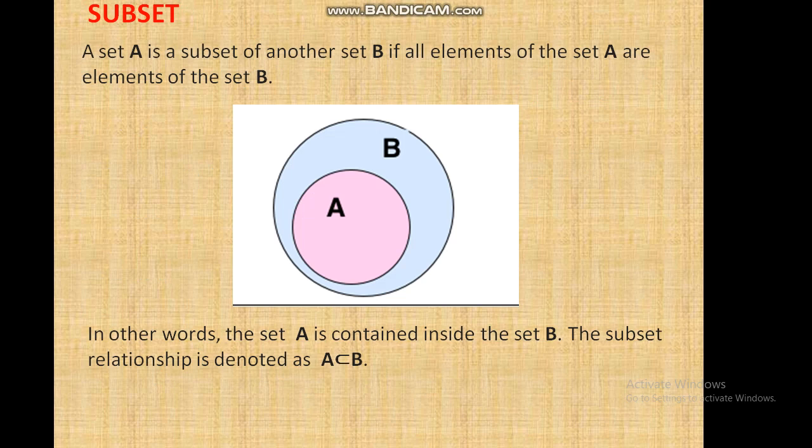Subset: A set A is a subset of another set B if all the elements of set A are elements of set B. In other words, set A is contained inside B. By Venn diagram, the subset relationship is denoted by A ⊆ B.